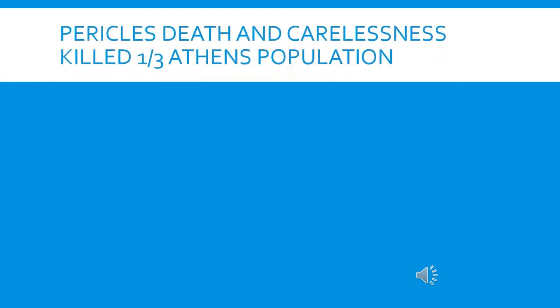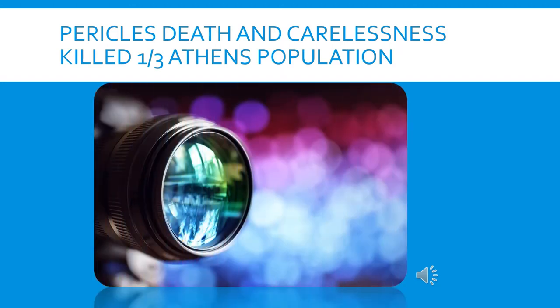From the video, we can understand the underestimation of a disease — it could kill anybody, as it killed the king of Athens, his two sons, his wife, and one third of Athens' population. Pericles was large and in charge, and things were looking up. But there was no alternative plan to maintain the power of Athens after his death. His death was a disaster for Athens.